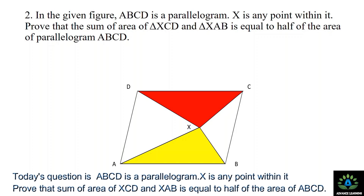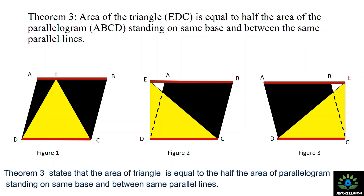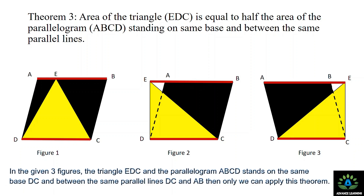As a question, in the given figure, ABCD is a parallelogram and X is any point within it. Prove that the sum of the area of triangle XCD and triangle XAB is equal to half of the area of parallelogram ABCD. At the beginning, we use Theorem 3 of the parallelogram concept: the area of a triangle is equal to half of the area of the parallelogram standing on the same base and between the same parallel lines.